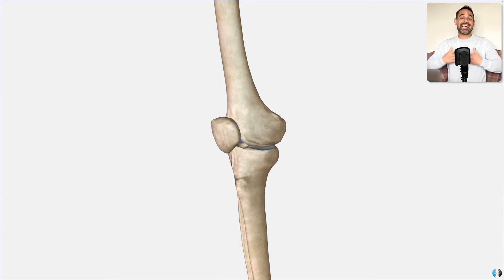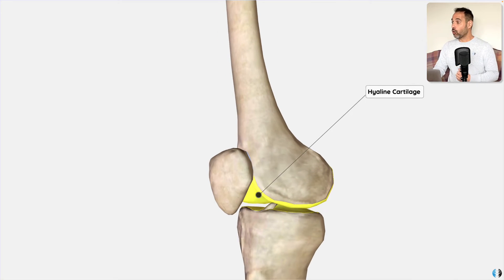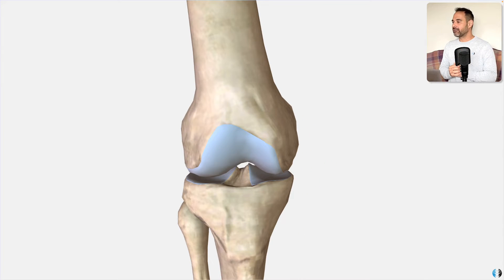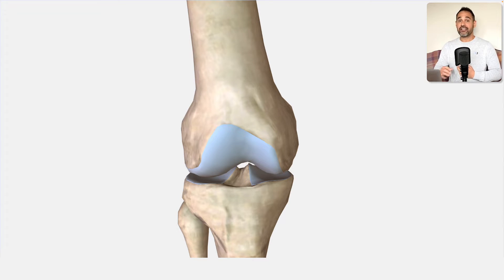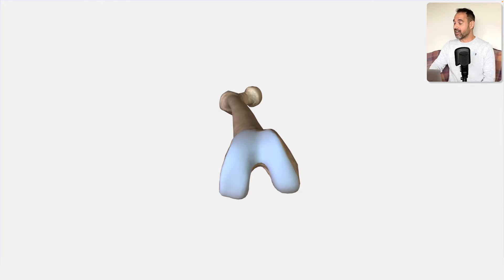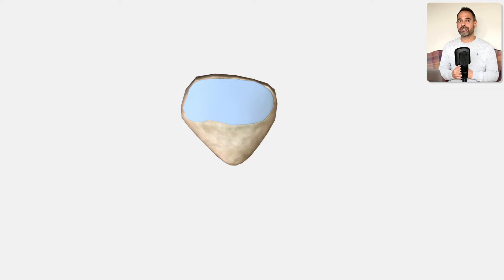The patellofemoral joint is a plain joint, and like all major joints in the body, it is lined with hyaline cartilage or articular cartilage — a shiny, hard protective layer that covers the articulating bones. Here we can see the cartilage which runs over the trochlea of the femur, and from a different angle you can see how that layer of cartilage really runs around the whole femur bone at the inferior articulating section. Here we can see the retro surface of the patella, which is also covered in hyaline cartilage.